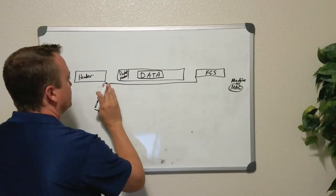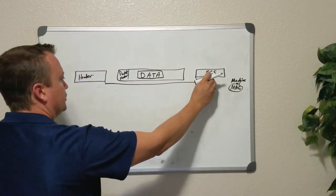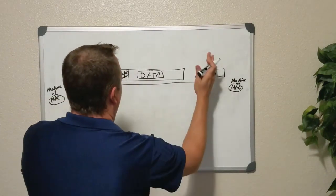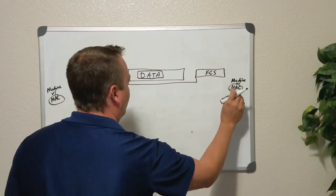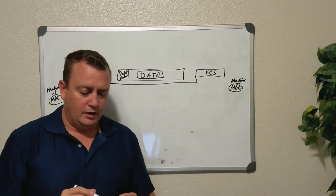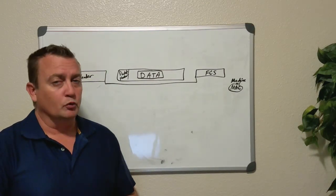Either way, just know that there's nothing actually connecting the trailer, the FCS, the frame check sequence on a frame to the header. But think of a frame as framing the data and whatever is being sent from one MAC address on one device to the other MAC address on the other device. With that being said, I'll see you in the next video. And we'll talk more about frames.